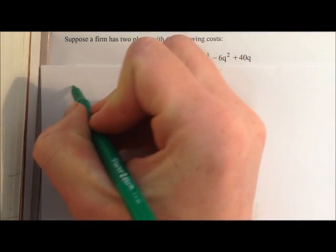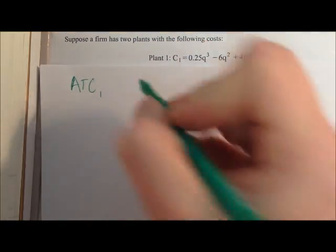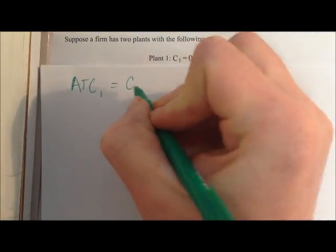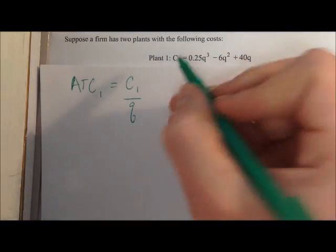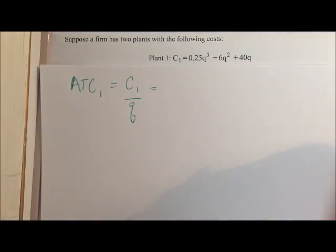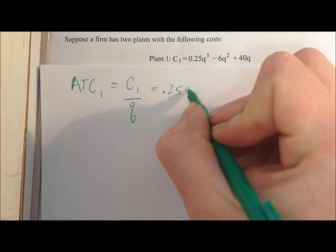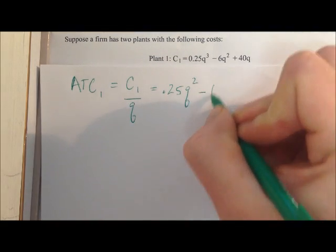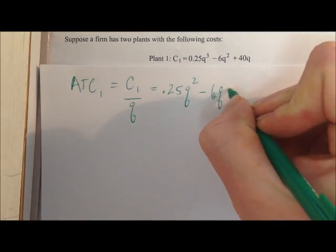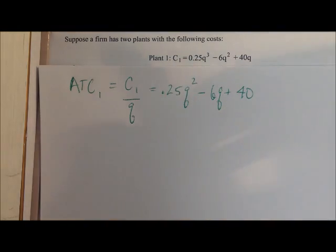So we're going to have ATC1 equals C1 over Q, which is going to equal 0.25Q squared minus 6Q plus 40.